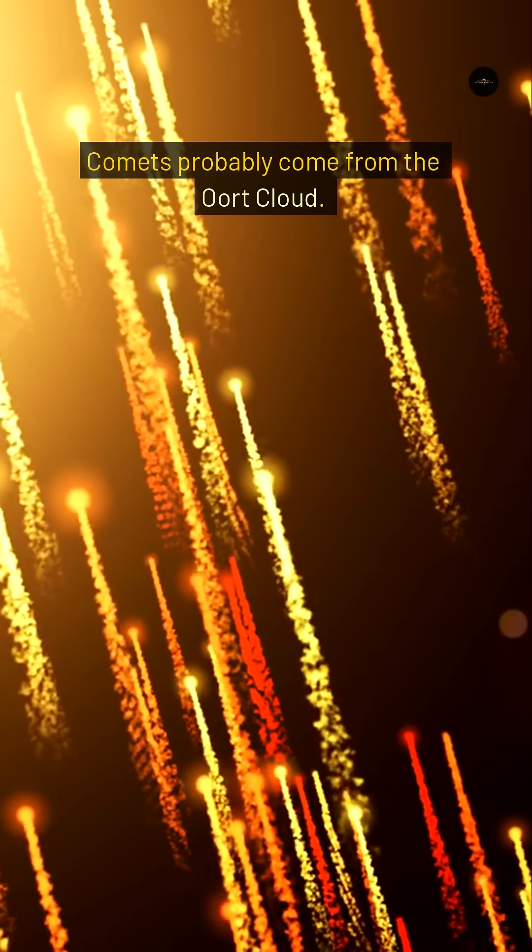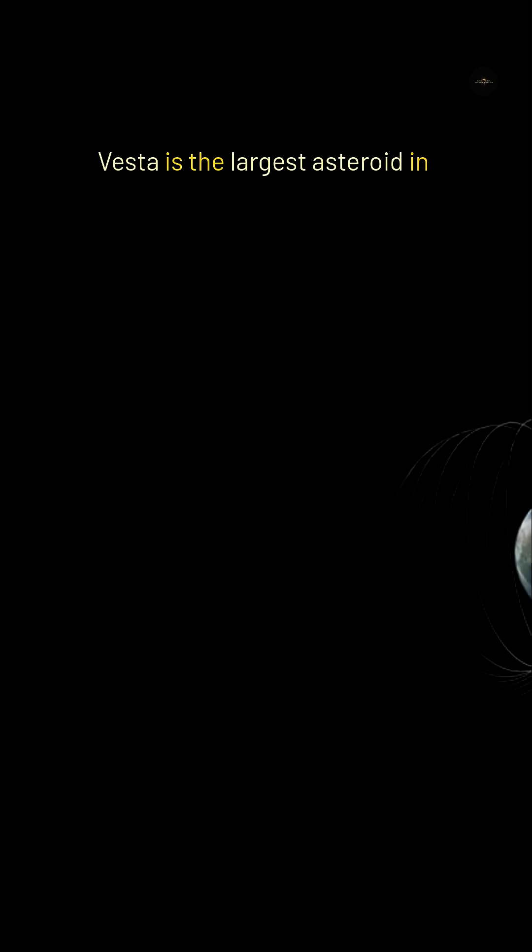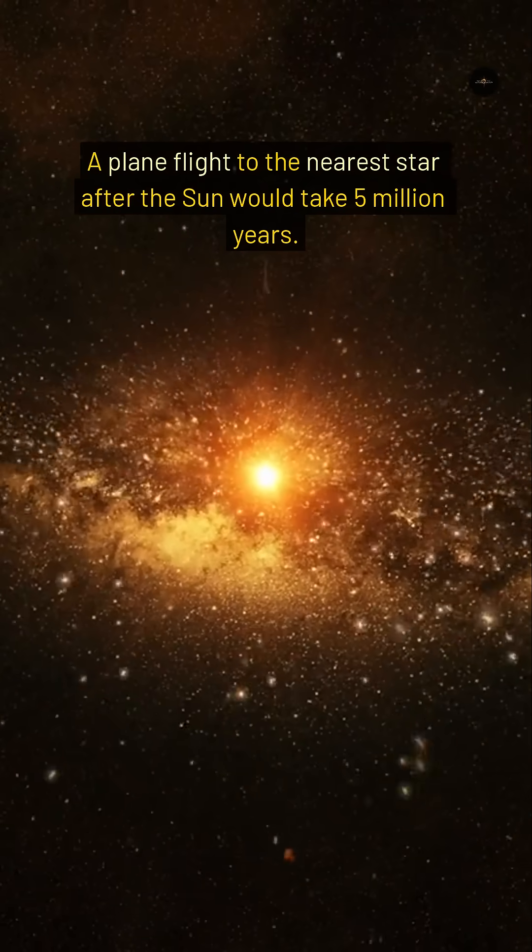Comets probably come from the Oort cloud. Vesta is the largest asteroid in the solar system. A plane flight to the nearest star after the Sun would take 5 million years.